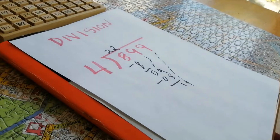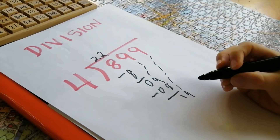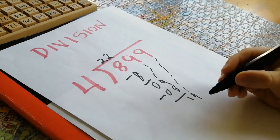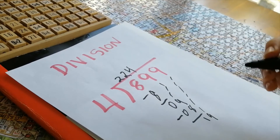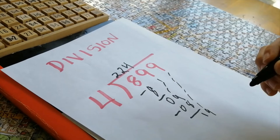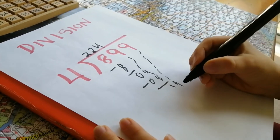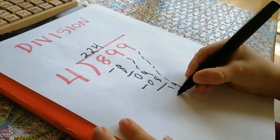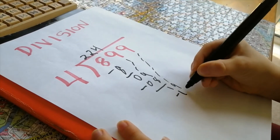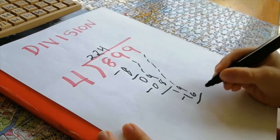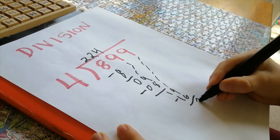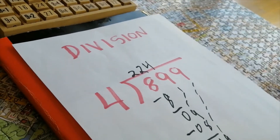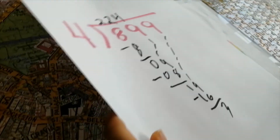¿Cuántas veces está el 4 en el 19? 4. 4 por 4, 16. Menos 16. 19 menos 16 es 3. La respuesta es 224 y tiene un residuo de 3.